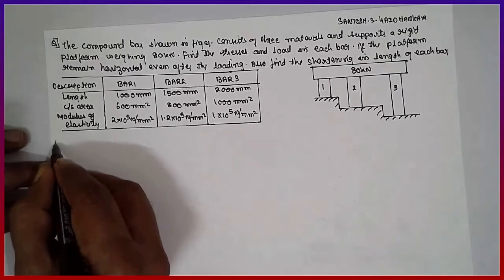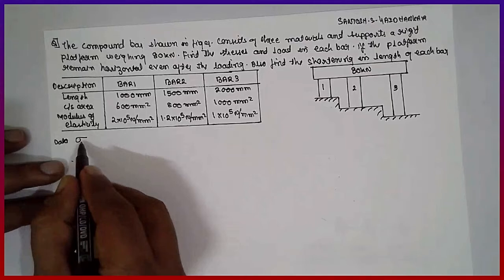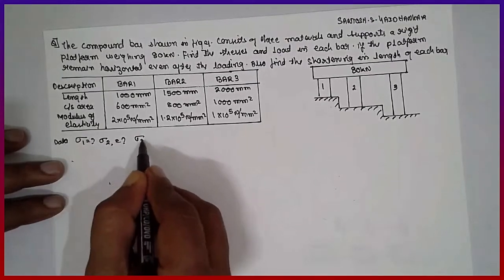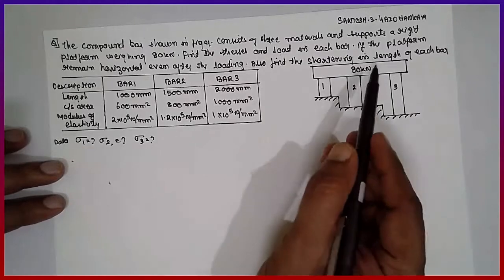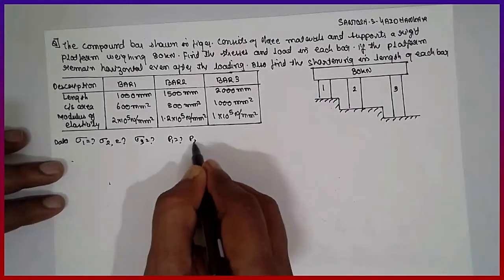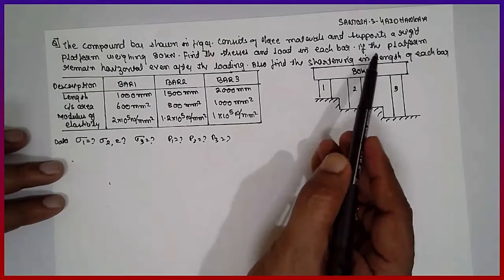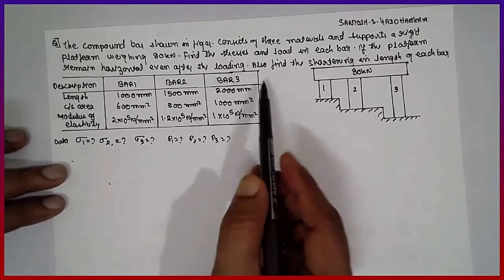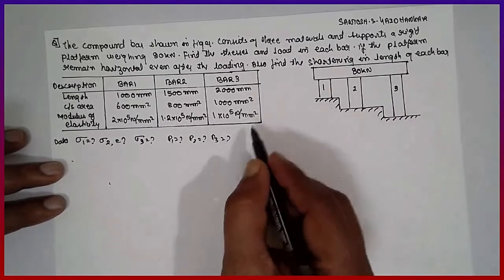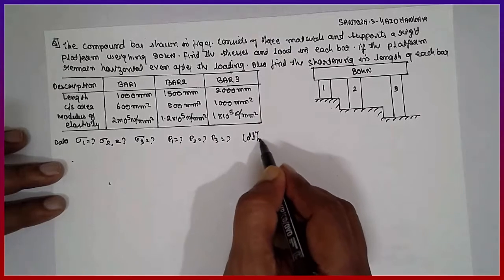We have to find out the stresses in bar 1, stresses in bar 2, and stresses in bar 3, and also find the loads P1, P2, P3. If the platform remains horizontal even after loading, also find the shortening in the length of each bar — delta 1, delta 2, or delta 3 — because it is a net deformation. The lengths are given for bar 1, bar 2, and bar 3.